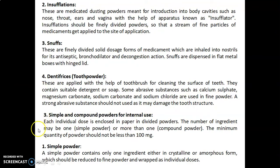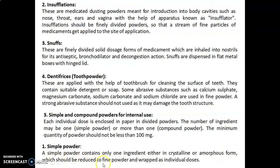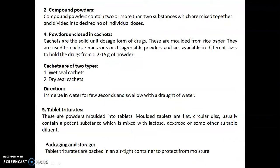The third class is simple and compound powder for internal use. Each individual dose is enclosed in paper in divided powders. The number of ingredients may be one, forming a simple powder, or more than one, forming a compound powder. The minimum quantity of powder should not be less than 100 milligrams. A simple powder contains only one ingredient, either in crystalline or amorphous form, reduced to fine powder and wrapped as individual doses. A compound powder contains two or more substances mixed together and divided into the desired number of individual doses.